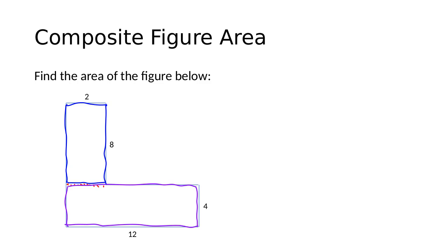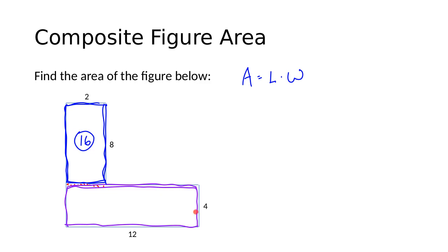Looking at those two rectangles, I can see that the first rectangle has a length of 8 and a width of 2. Using the formula for the area of a rectangle — area equals length times width — I'll multiply 8 times 2 and find the area of this piece to be 16. Looking at the other rectangle, it has a length of 12 and a width of 4, so I'll multiply those together: 12 times 4 equals 48.